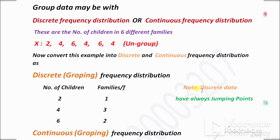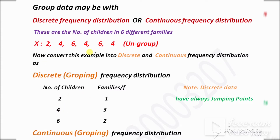Discrete grouped data always has jumping points — for example, 1, 2, 3, 4 or 2, 4, 6 — where each number has some gap between the two. For the discrete grouping frequency distribution, start from the lowest number, which is 2, and cover up to the highest, which is 6. So: 2 appears 1 time, 4 appears 3 times, and 6 appears 2 times. This becomes the discrete grouping frequency distribution.